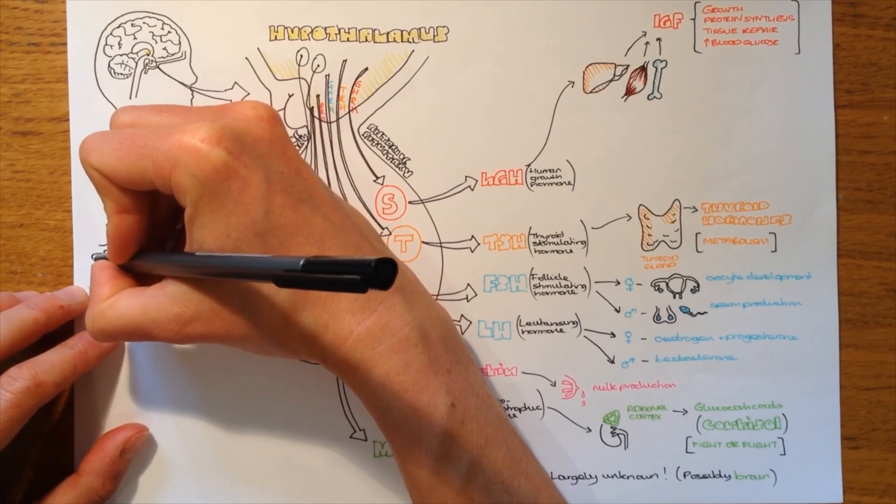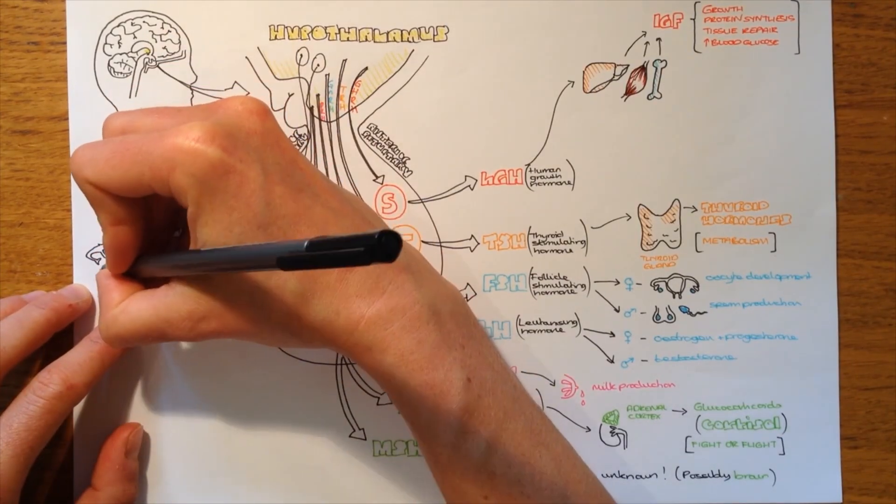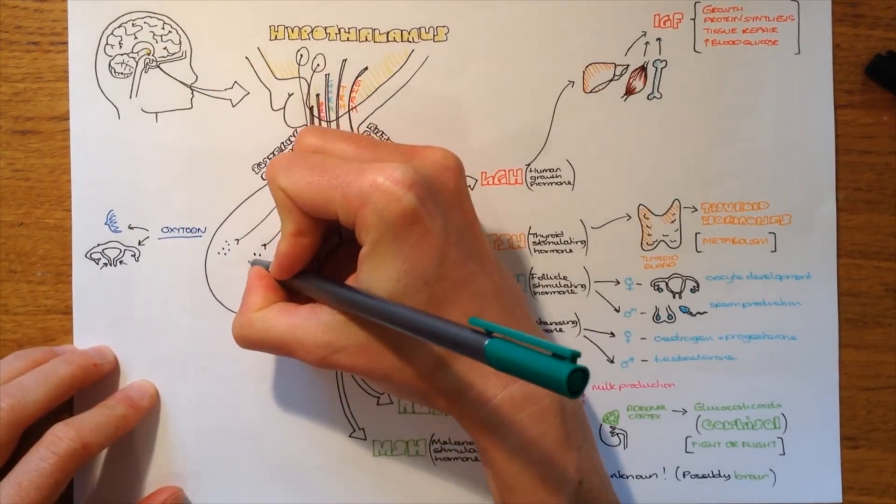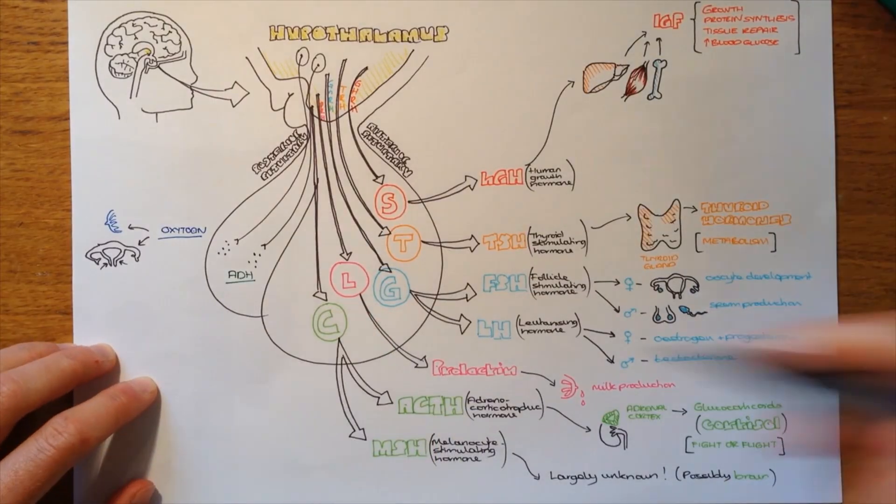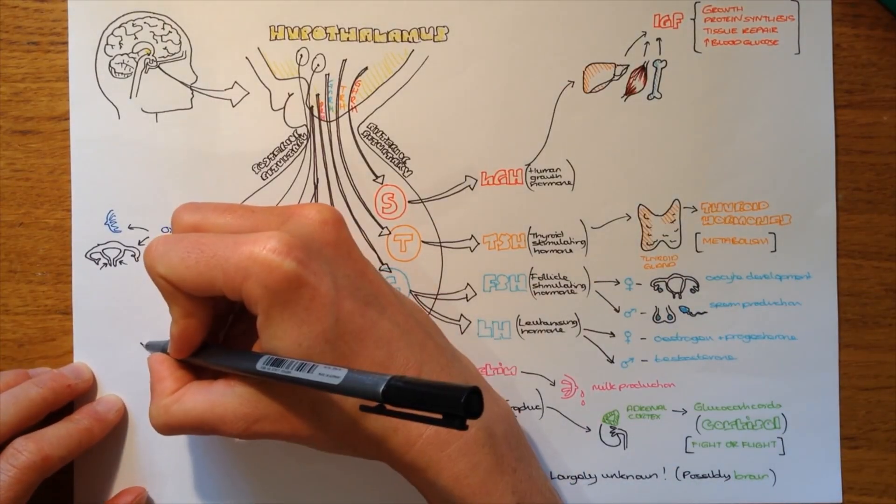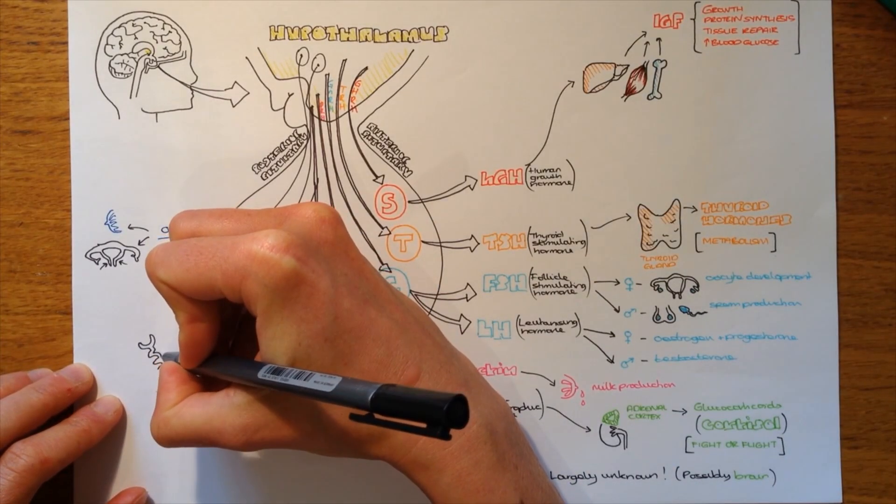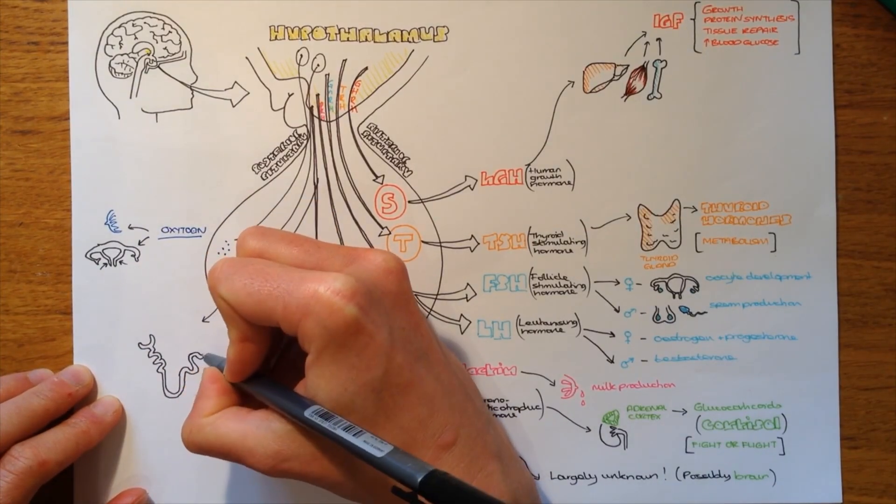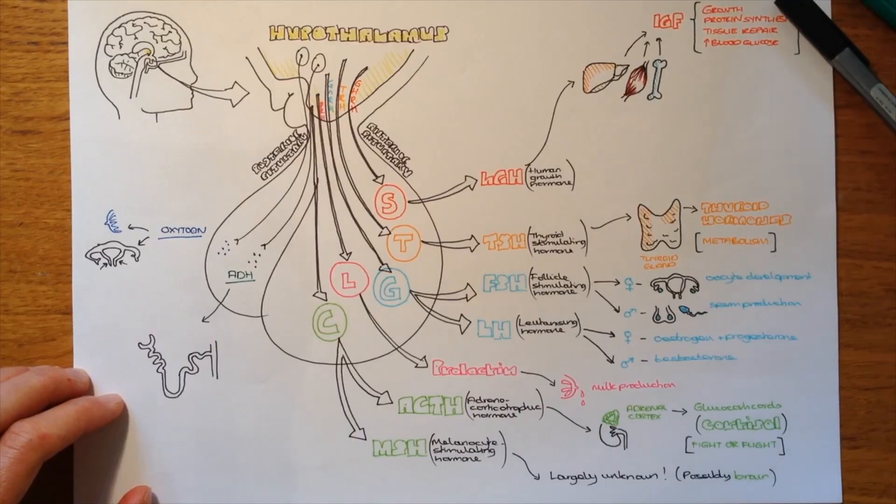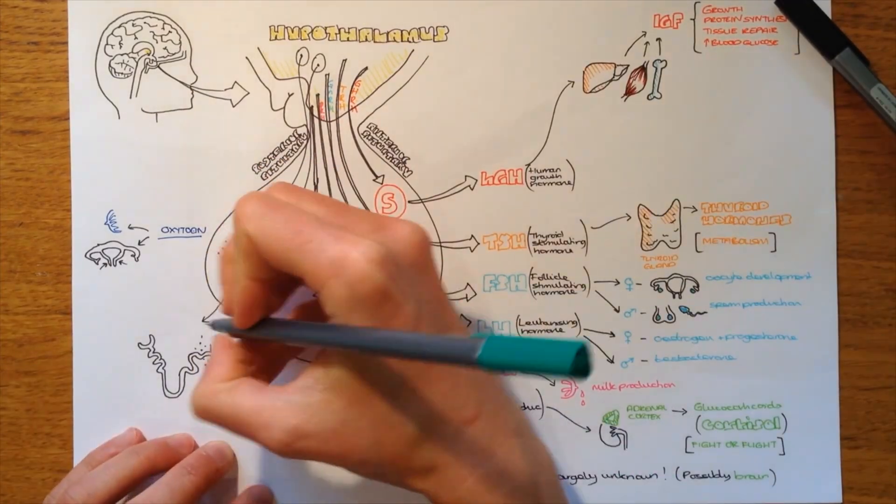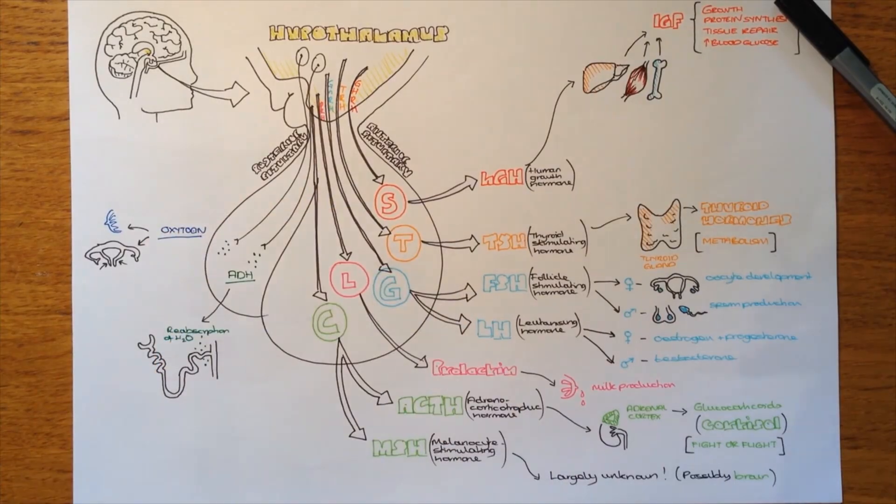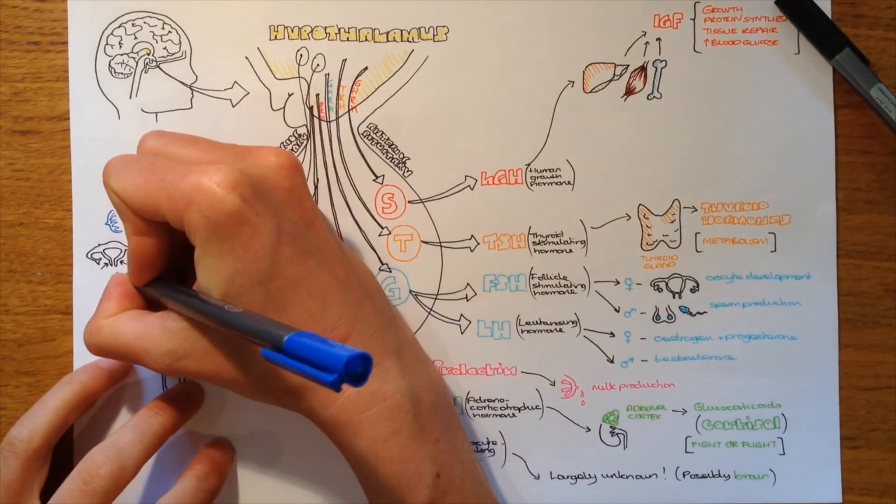And there's only two hormones produced by the posterior pituitary. These are oxytocin and antidiuretic hormone, ADH. Oxytocin is involved in the breasts and also contraction of the uterus during labor. And antidiuretic hormone is produced in response to low levels of water in the blood, or low blood pressure. And what it does is it triggers the nephron to reabsorb water. So we can raise our blood pressure that way.